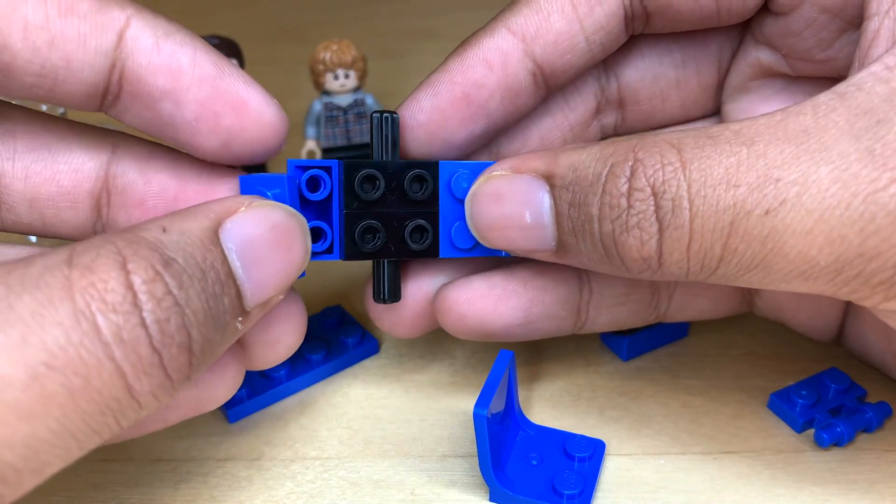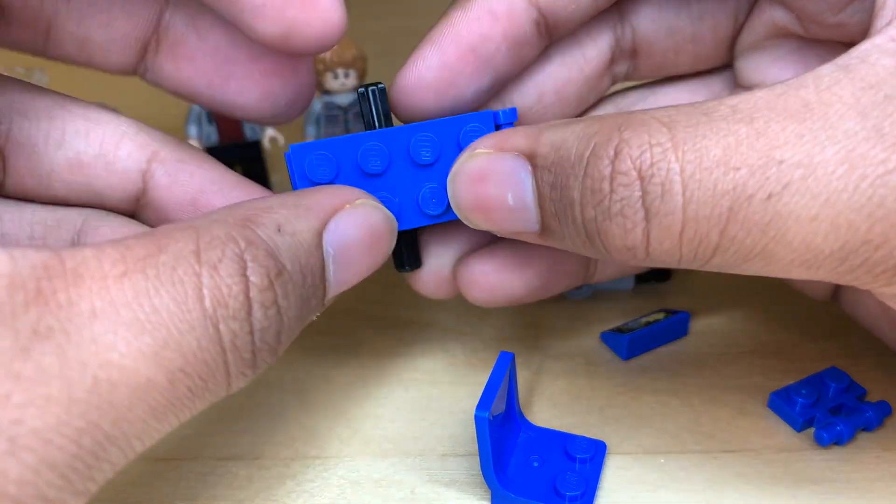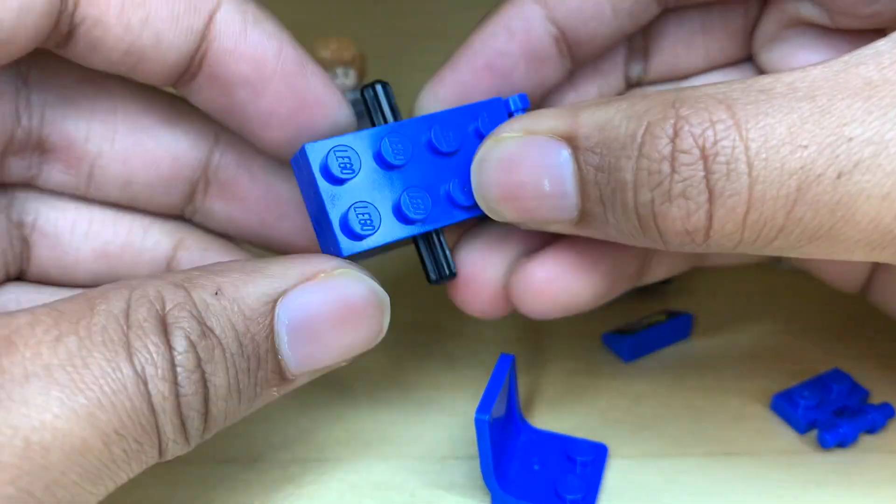So we're just going to put the 1x2 plate that's modified up at the front. We're going to put the regular one at the back, and then we cap it all off with the 2x4.